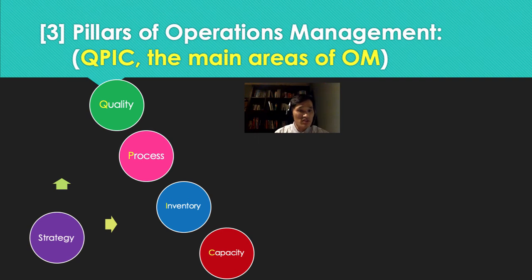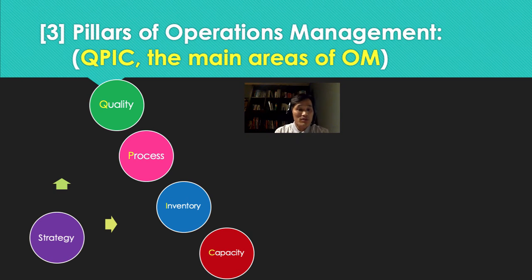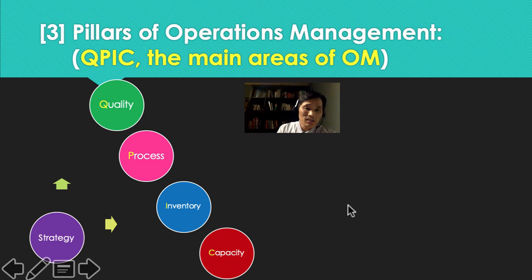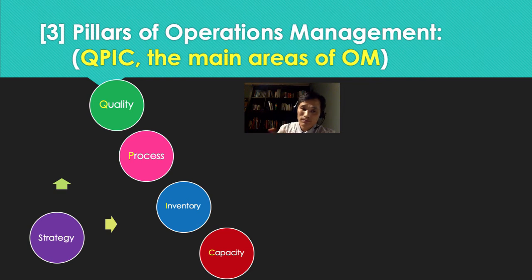All these decisions in QPIC — quality, process, inventory, and capacity — are determined by strategy. If you are using a cost-driven strategy like Walmart, you might ignore quality to a certain degree and try to produce and procure products and raw materials as cheaply as possible. However, if you are pursuing a quality strategy, then you might ensure that you get high-quality raw materials and make much effort to ensure the quality of the products throughout manufacturing and sourcing.